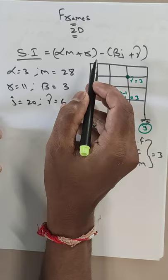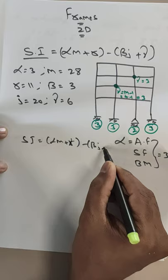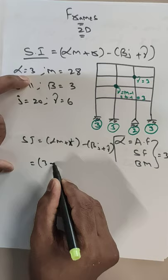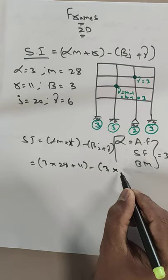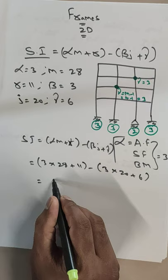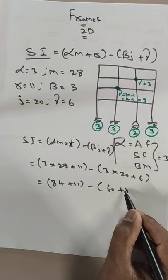Now substituting into our equation: Si equals alpha times m plus r minus beta times j plus gamma. That is 3 times 28 plus 11 minus 3 times 20 plus 6. This gives 84 plus 11 minus 60 plus 6, which equals 95 minus 66, equal to 29. So the static indeterminacy is 29. If you have any doubts, you can ask me. Thank you.